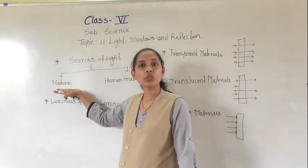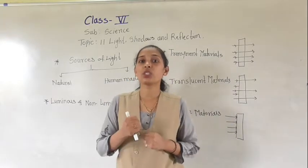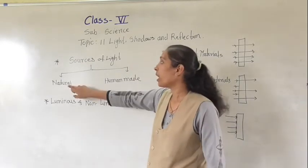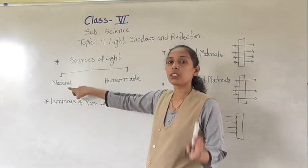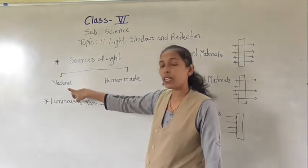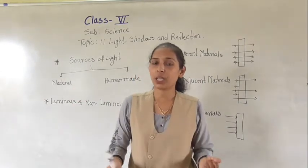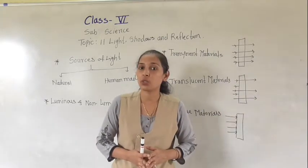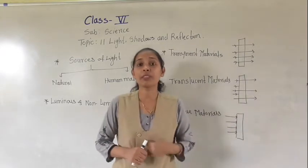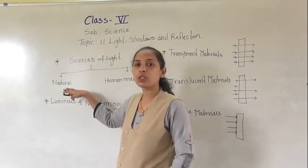Natural sources of light are the sources which occur in nature. The sources of light which are present in nature are called natural sources of light. For example, the sun, stars, and fireflies that we see during the night — all these are examples of natural sources of light.